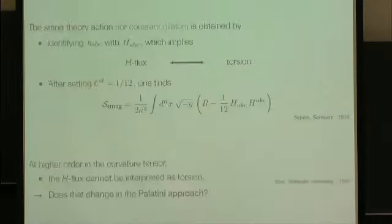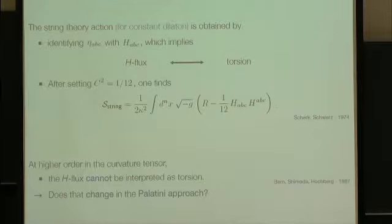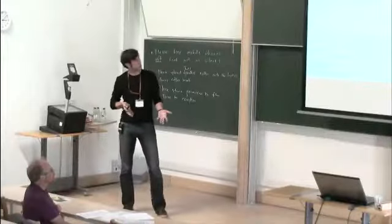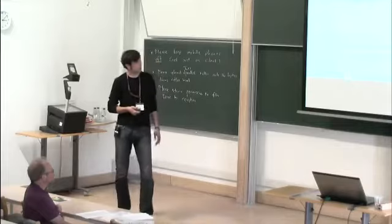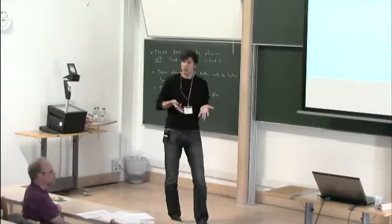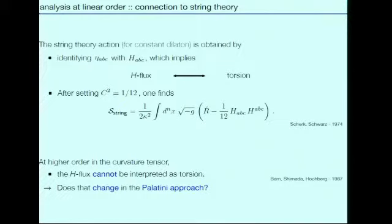If you integrate out the connection and take this torsion tensor, plug it in here, what you find is that your action looks like the normal Riemann tensor with the Levi-Civita connection and there's a term looking like this. To make a connection to string theory in the NS-NS sector for constant dilaton, it's done by identifying this eta with the H flux. If you set this constant C squared to 1 over 12, you find the string action for constant dilaton. This is long been known. At linear order in the curvature, you can identify the H flux with the torsion. However, it has been shown that at higher orders in the curvature tensor, at second order for instance, the H flux cannot be interpreted as torsion.